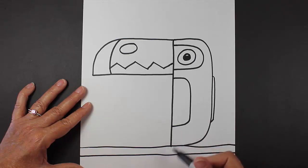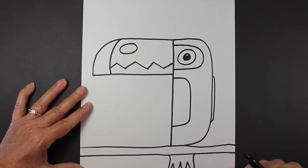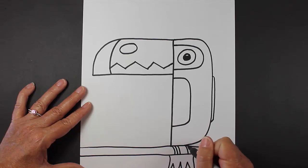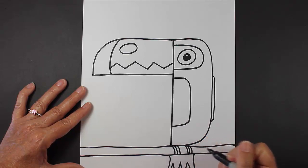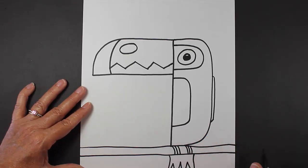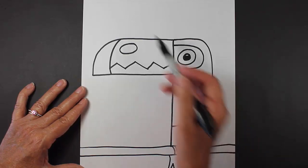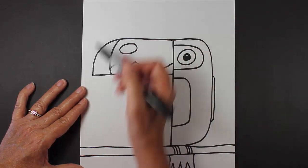Down underneath your toucan, you can make some tail feathers, and then also some feet. This is how I make my toucan's feet, his toes. Alrighty, so let's go back and look at our background.